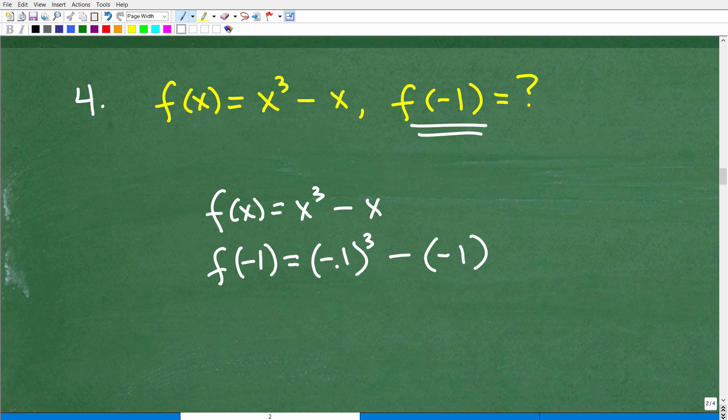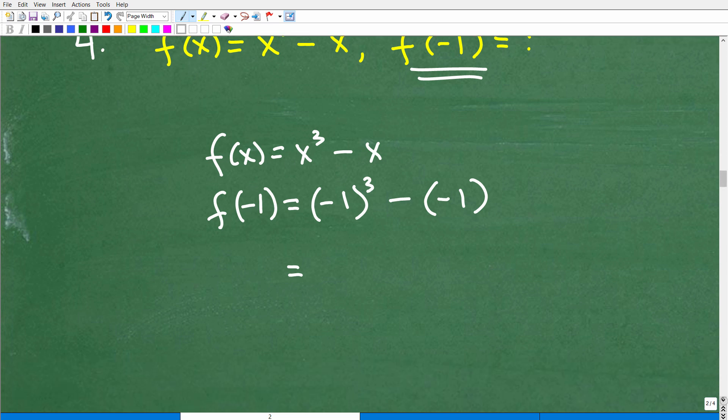Now, before you go any further, you want to make sure that you set the problem up correctly. Okay, f of negative 1, here's x, there's negative 1 cubed, okay, everything looks good. So now you want to go ahead and continue on with the problem. And for me, you don't have to keep writing f of negative 1 right here. You can just put little equal signs, and now we have to just go ahead and take this thing one at a time, negative 1 cubed. What does that mean?